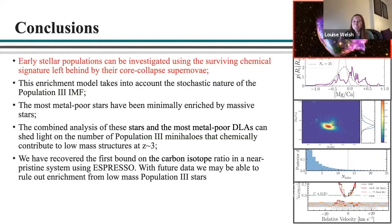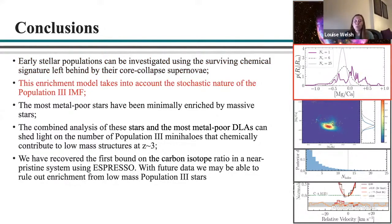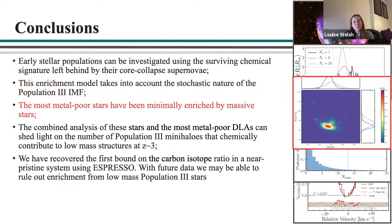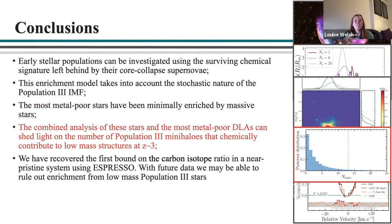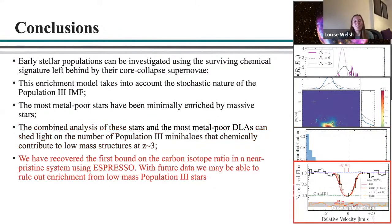My conclusions are: early stellar populations can be investigated using the surviving chemical signature from their core-collapse supernovae, and this enrichment model accounts for the stochastic nature of the Population III IMF. The most metal-poor stars appear to have been minimally enriched by massive Population III stars. The combined analysis of these stars and the most metal-poor DLAs may offer a way to probe the number of Population III mini-halos contributing to low-mass structures at redshift three. Finally, we've placed the first bound on the carbon isotope ratio in a near-pristine system, and with future data we hope to rule out enrichment from low-mass Population III stars.